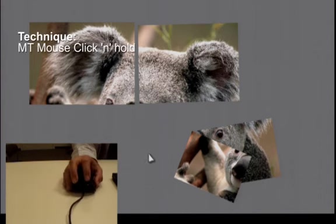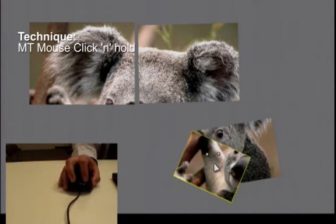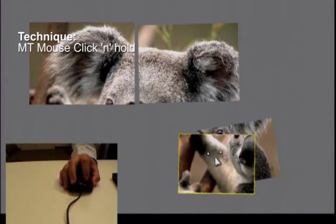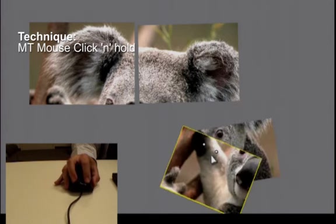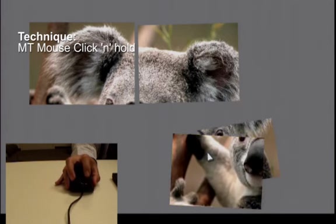In the MT Mouse Click and Hold technique, touches only manipulate the object when the mouse is in the clicked state. The current selection is determined by mouse cursor position. Manipulation continues as long as the mouse is in the clicked state. The selection is cleared on mouse up.